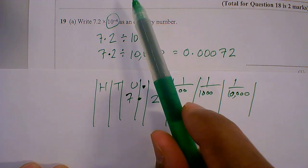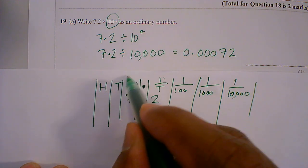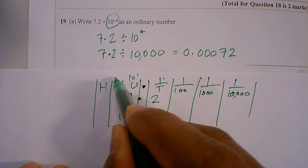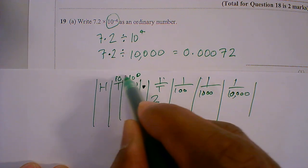Because it's got ten to the power minus 4, we label these. So this is ten to the power 0. Ten is just ten to the power 1. Hundreds is ten to the power 2.